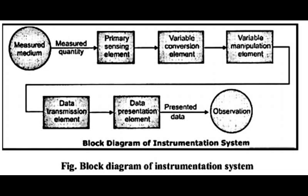Primary Sensing Element. The Primary Sensing Element of the system is that which first receives energy from the measured medium and produces an output depending in some way on the value of measured quantity.